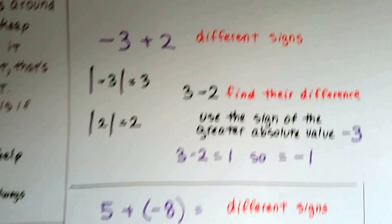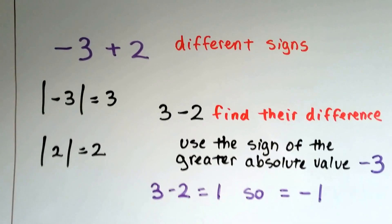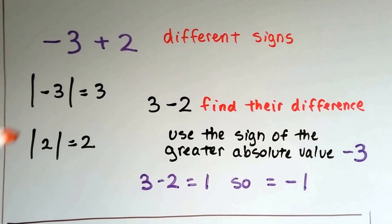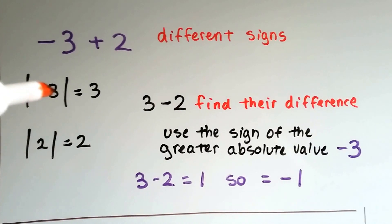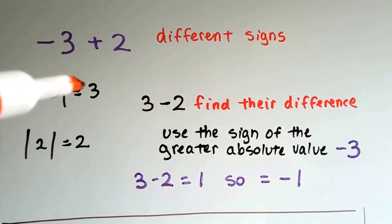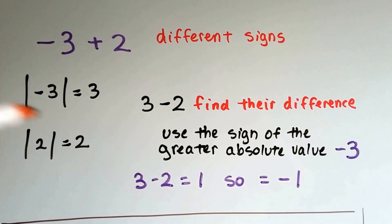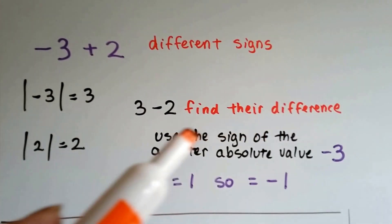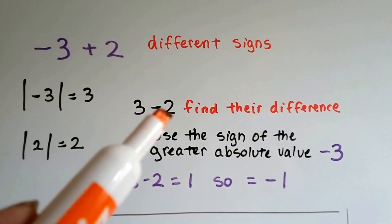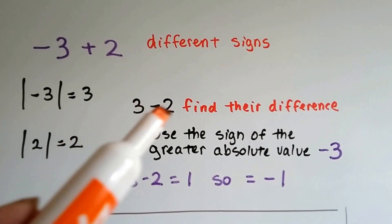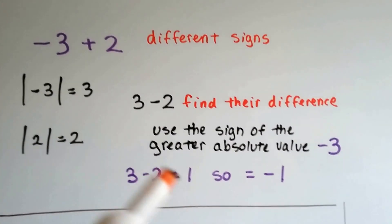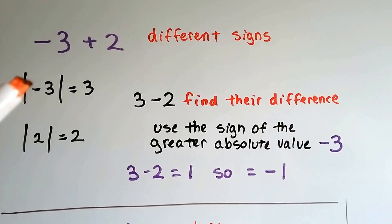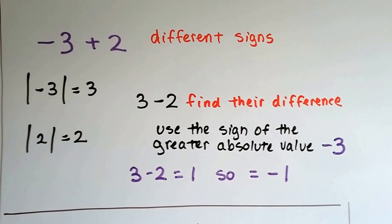Now they have different signs. We have negative 3 plus 2 — that's a positive 2. We find their absolute values: the absolute value of negative 3 is 3, and 2 is just 2. Different signs, so we find the difference: the difference between 3 and 2 is 1. Now we take the sign of the greater absolute value, which is negative 3. So the answer is negative 1.